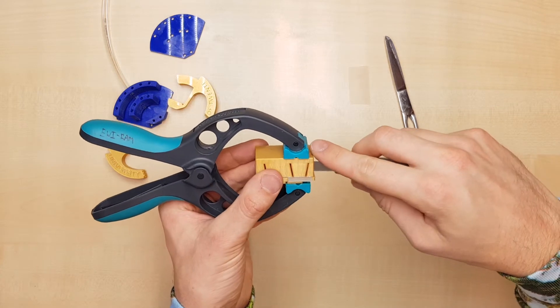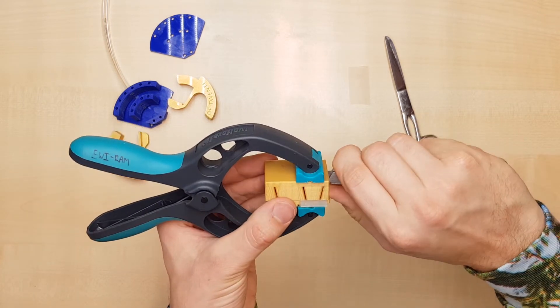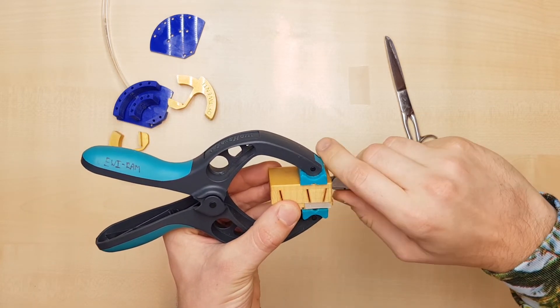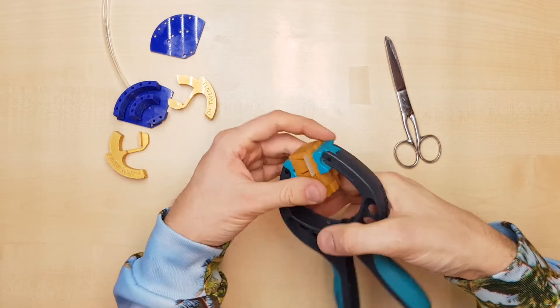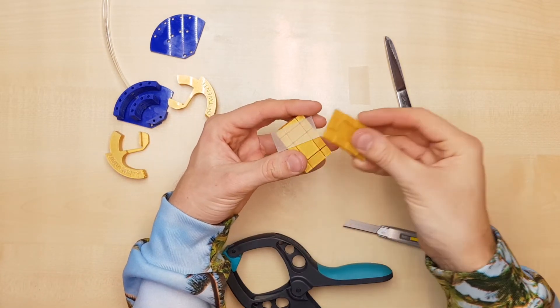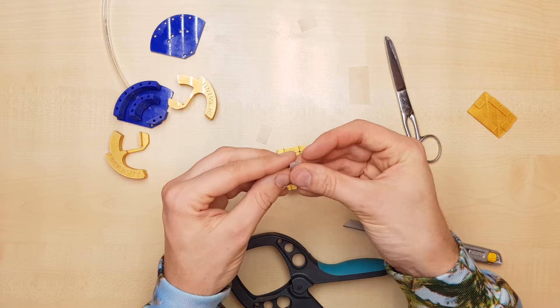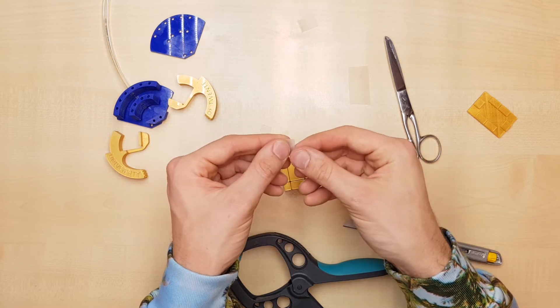The edges are slanted, so every seal gets a larger and a smaller face. The larger face is always oriented towards the pressure chamber.